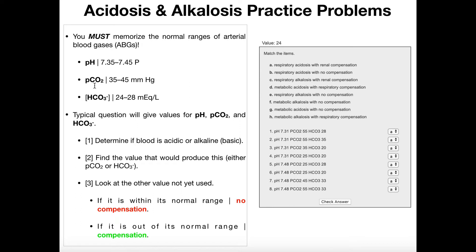Carbon dioxide, or CO2, is a gas, so it's measured in pressure units. The pCO2, or the partial pressure of CO2, is between 35 and 45 millimeters of mercury. The concentration of bicarbonate ion, HCO3 minus, is between 24 and 28 milliequivalents per liter. The actual ranges you do have to memorize, because these problems are going to give you values, and if the value is outside this range it's considered abnormal.